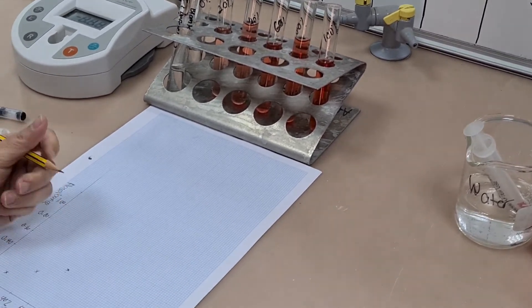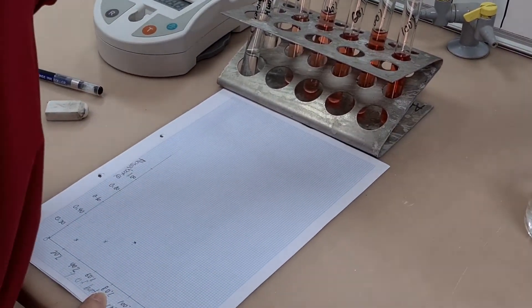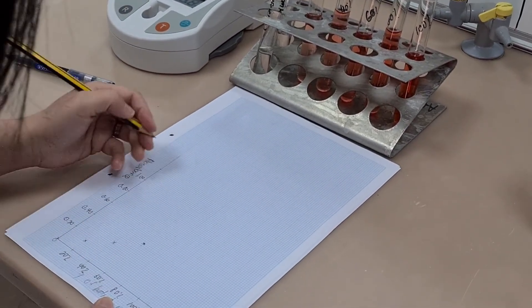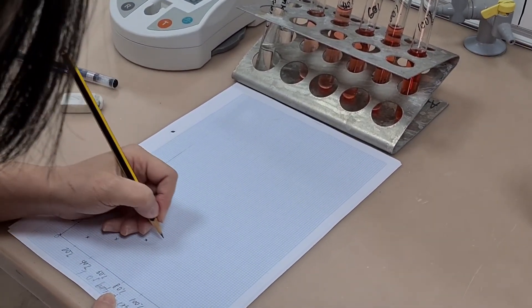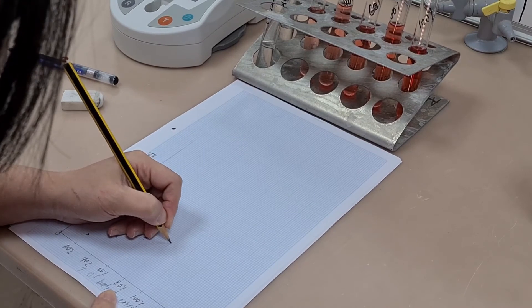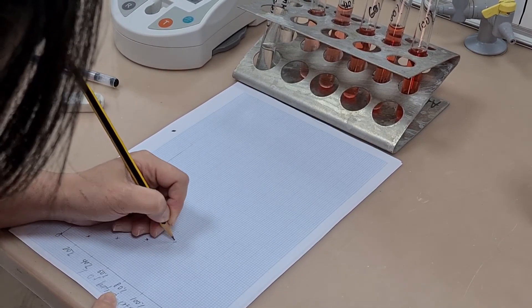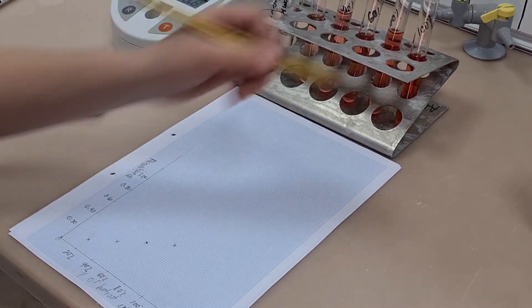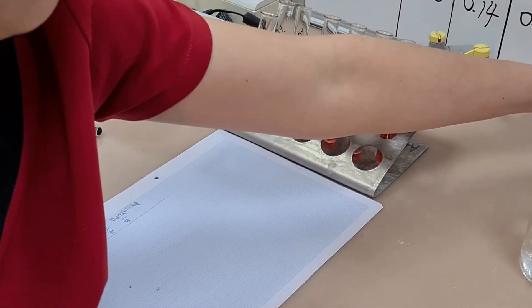The other mistake that has been made with this graph is remember whatever graph paper you're given, you're expected to use the full size of the graph paper. You can see here on the y-axis that actually she could have chosen double the scale and that adds clarity to your graph.